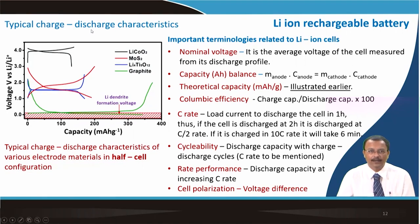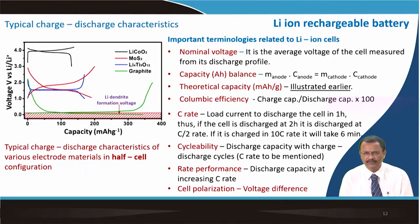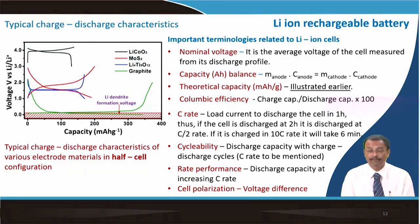For different electrode materials such as lithium cobalt oxide, molybdenum disulphide, or lithium titanium oxide (LTO), the typical charge and discharge potentials vary. The voltage is not always constant — it changes continuously upon discharge and charge. The nominal voltage is the average voltage of the cell measured from the discharge profile. We have already discussed the capacity of the cathode and anode.